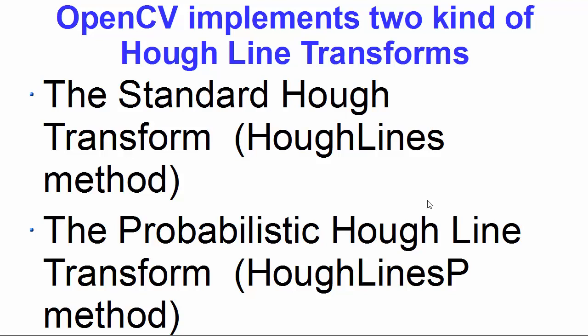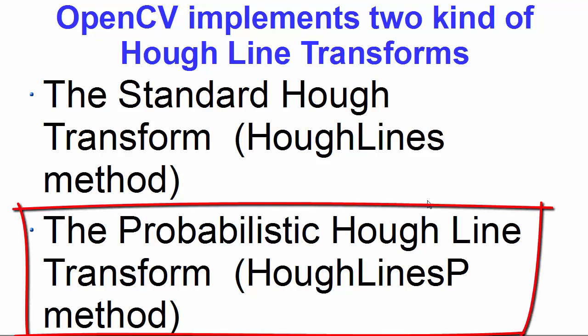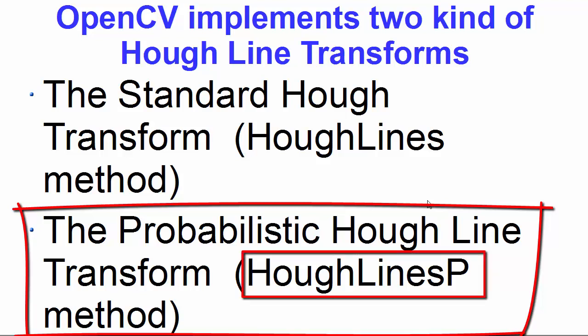Hey guys, welcome to the next video on OpenCV tutorial for beginners using Python. In the last video we saw how to use the standard Hough transform using the HoughLines method in OpenCV. Now in this video we are going to see how to use the probabilistic Hough line transform using a method called HoughLinesP in OpenCV.